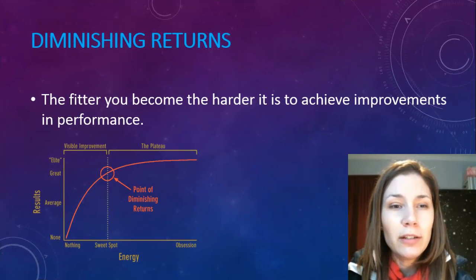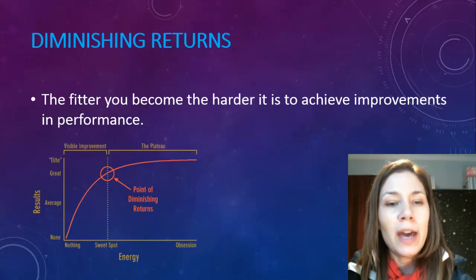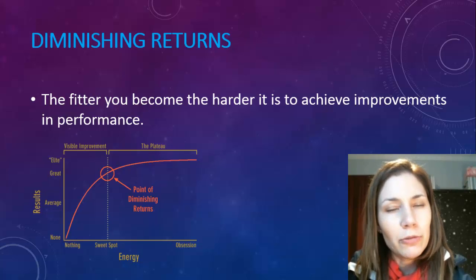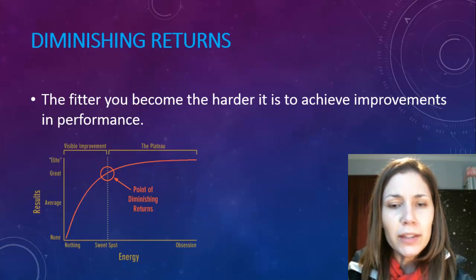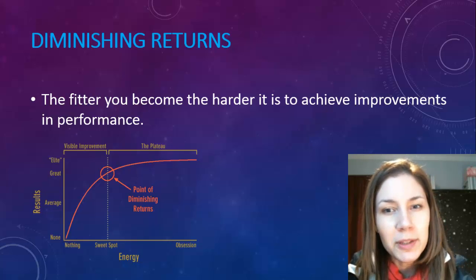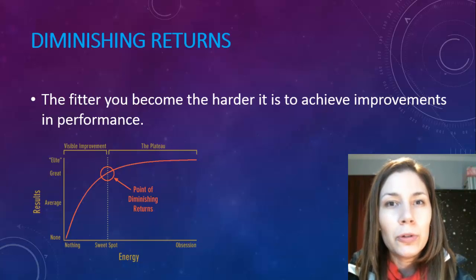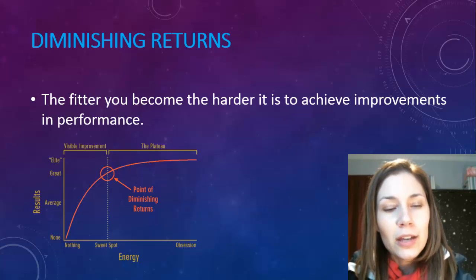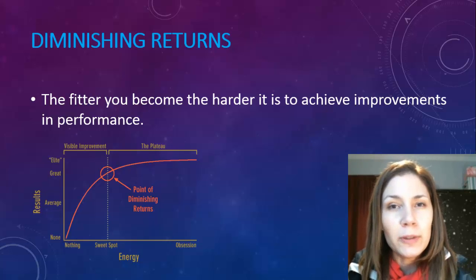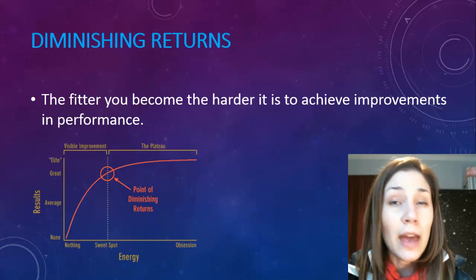Diminishing Returns is an interesting one — it basically means the fitter you become, the harder it is to get better. Your body will eventually reach a maximum point or plateau. For example, a sprint athlete will keep improving over time, but eventually they'll only be shaving off milliseconds or hundredths of seconds. Their improvements get smaller and smaller — that's a diminishing return. The athletes with a higher ceiling will ultimately be the best.